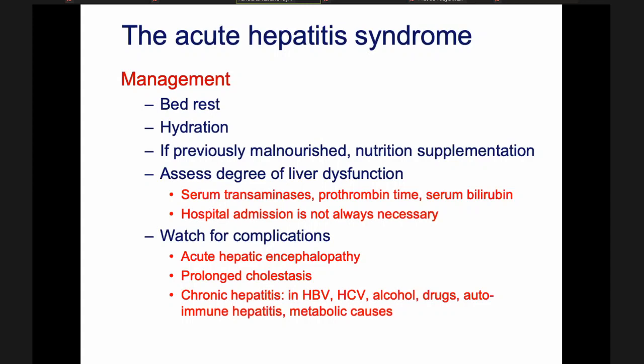One complication is acute hepatic encephalopathy. There can also be prolonged cholestasis — when the patient recovers from the hepatitis syndrome itself but the yellowness and itching continue. Some causes produce chronic hepatitis, and if the cause in your patient is one of those, it's important to follow up the patient after the acute hepatitis to see whether they go into chronic hepatitis. Causes that can lead to chronic hepatitis include hepatitis B virus, hepatitis C virus, alcohol, medications, autoimmune hepatitis, and metabolic causes.